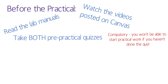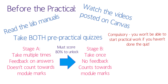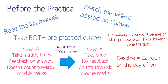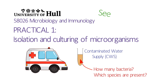There are two quizzes you've got to do before the practical. Stage A can be taken as many times as you like and will give you feedback on your answers so you can check whether you understand it. You've got to get 80% on stage A to unlock the stage B quiz. Stage B is the quiz that counts — you're only going to be able to take it once and there's going to be no feedback on your answers, so make sure you've got a really clear understanding of the practical before you take stage B. Both quizzes need to be taken before you attend the practical lab; they'll close at 12 o'clock on the day of your practical. Looking forward to seeing you in the lab so we can find out what's in those contaminated water samples.